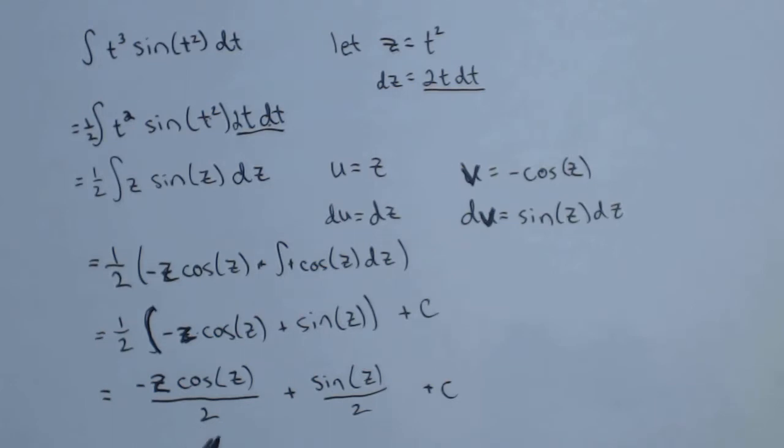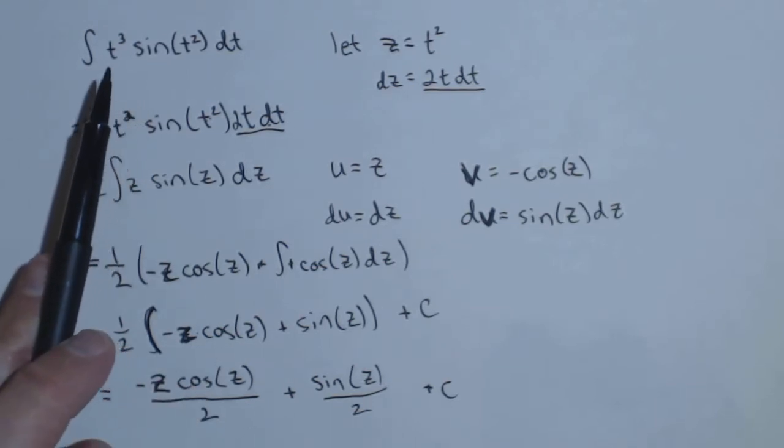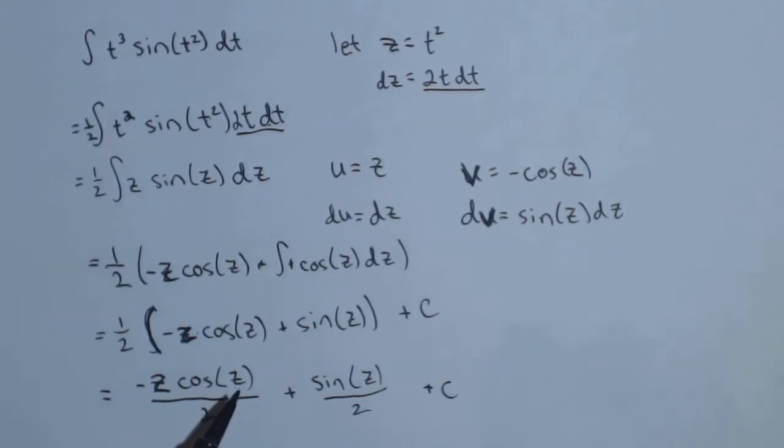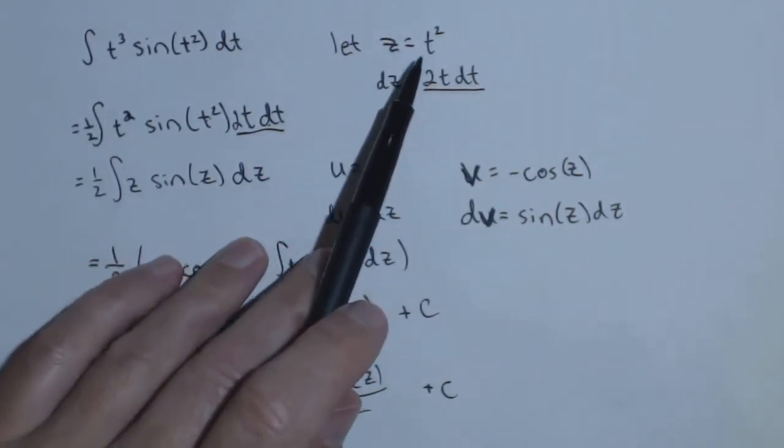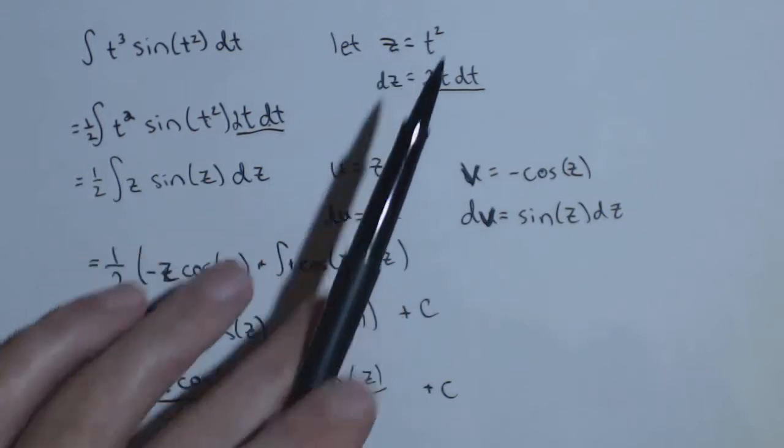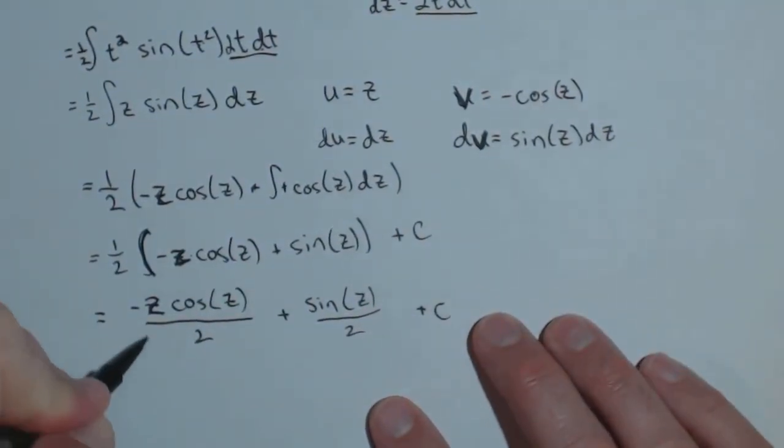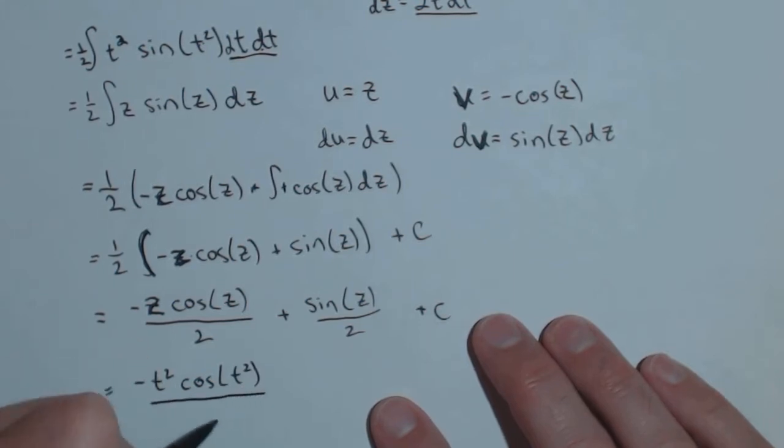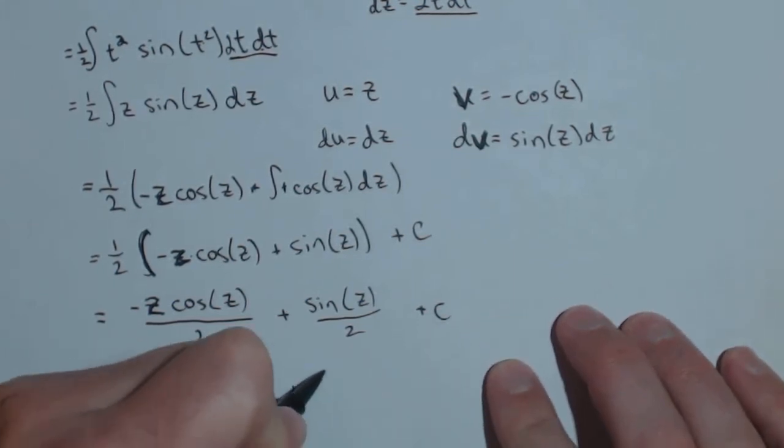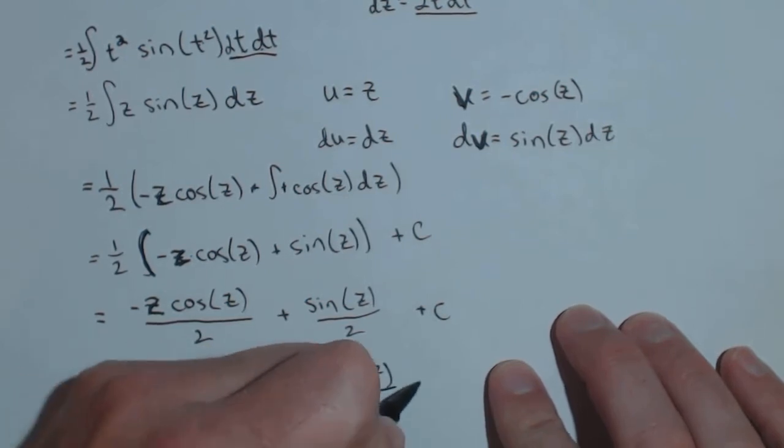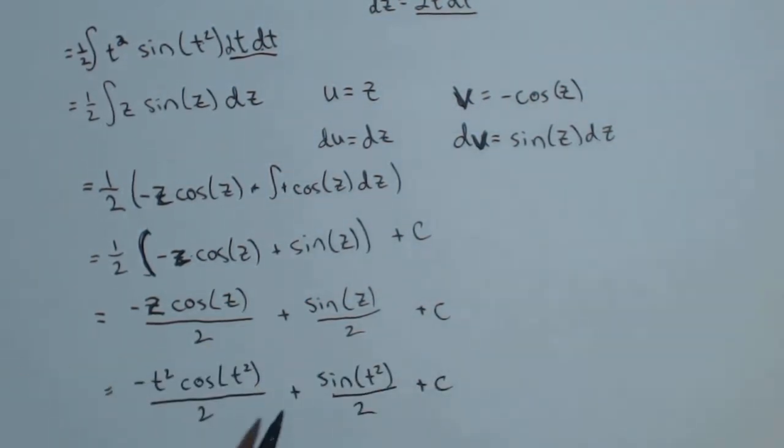Now we may initially think we're done at this point because we've done quite a bit of work. But remember, our original antiderivative was in terms of t, our final one needs to end in terms of t. Specifically, we need to substitute t squared in for our z's, and then we'll be complete. So we'll have negative t squared cosine of t squared over two, plus sine of t squared over two, plus c, and there's our antiderivative.